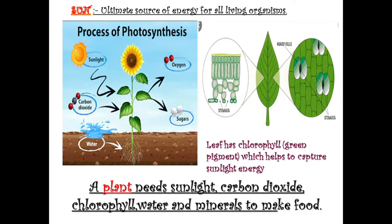The main inputs for photosynthesis are sunlight, carbon dioxide, chlorophyll, water, and minerals. Water and minerals travel from the roots to the leaves. As a result of photosynthesis, leaves produce oxygen as well as food.